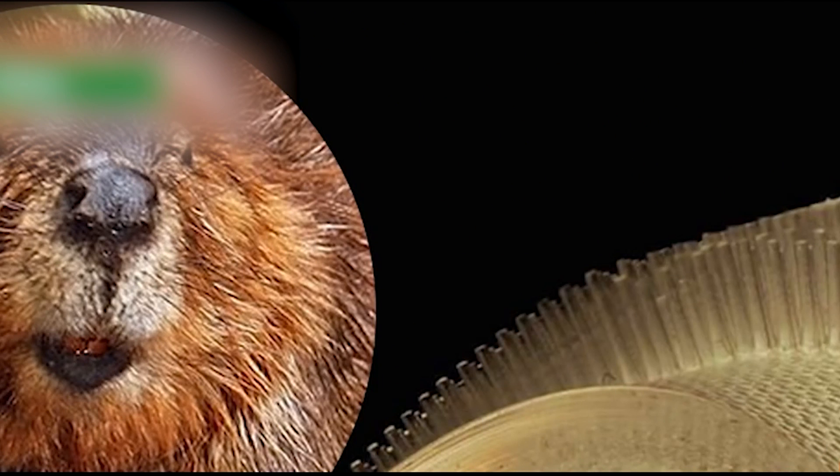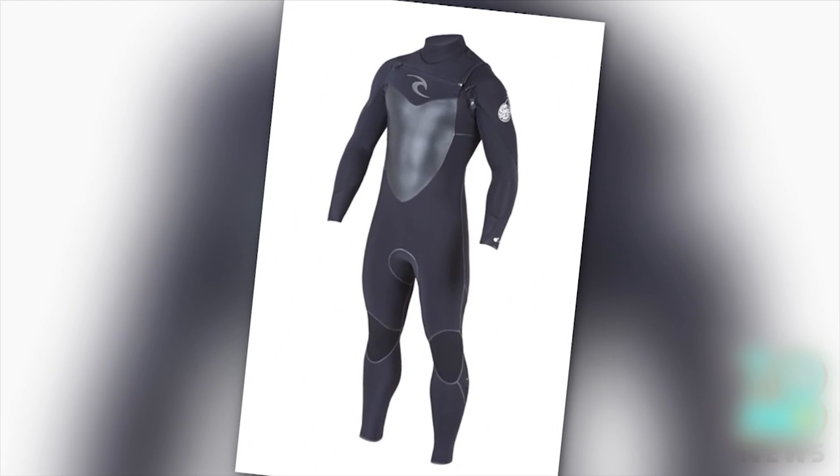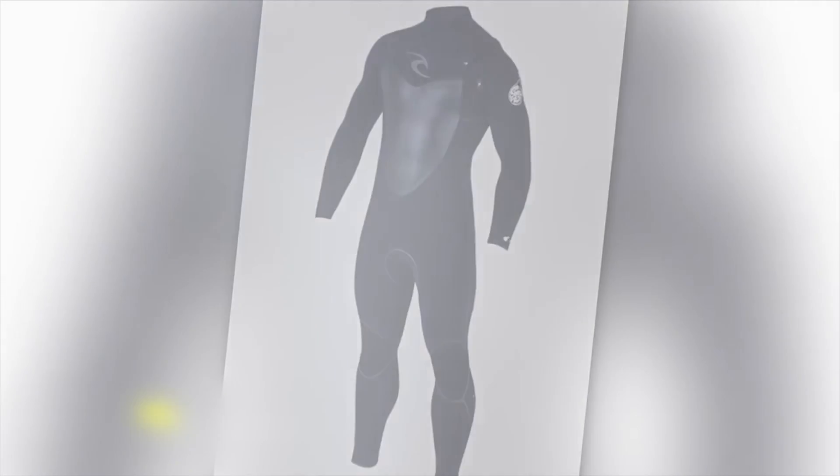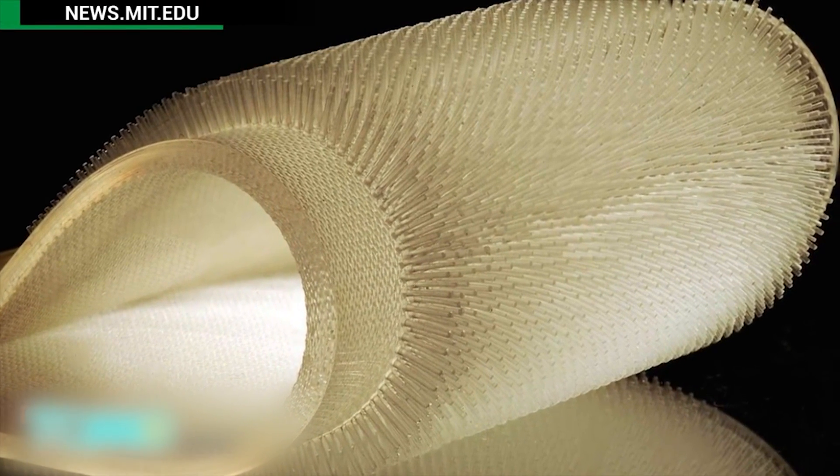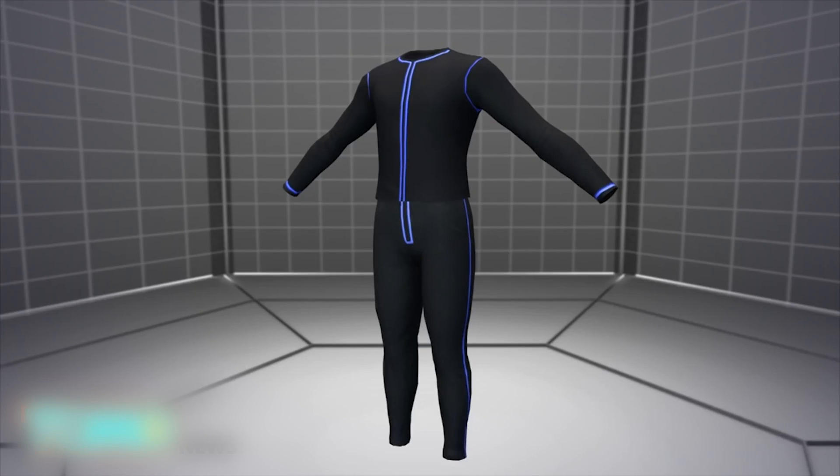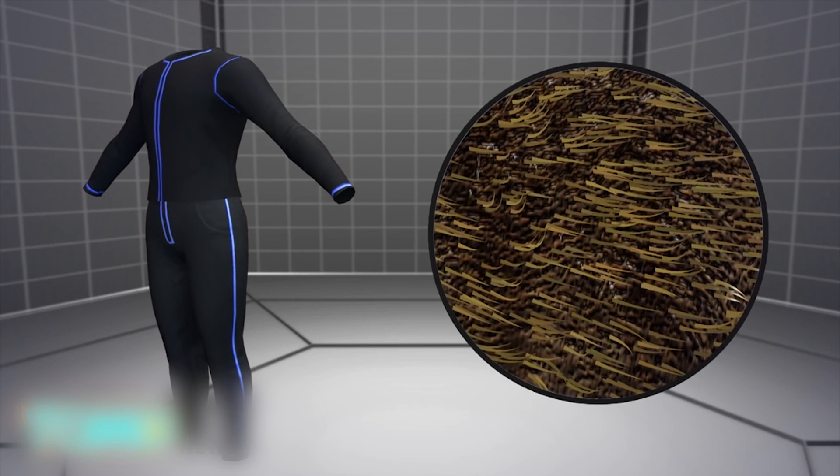MIT develops beaver-inspired material for wetsuits to keep surfers warm. A team of researchers led by a graduate student at MIT were inspired by semi-aquatic mammals to develop an insulating material that could lead to a new kind of wetsuit. The researchers looked to nature for ways to design a wetsuit for surfers that was warmer but also lighter and thinner. The researchers focused on beavers and otters.